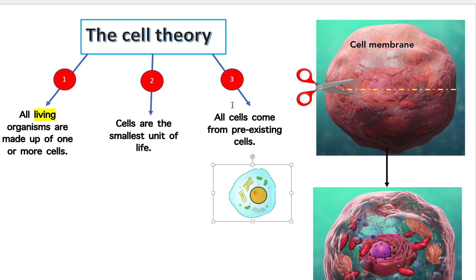The last cell theory is that all cells come from pre-existing cells. This makes sense because where does this cell come from? Think of a cell like a kid — where do kids come from? Their parents. The same way we come from our parents, cells come from pre-existing cells. You might ask where the very first cell came from — that's a complicated question and no one knows. Just know that all cells come from pre-existing cells.